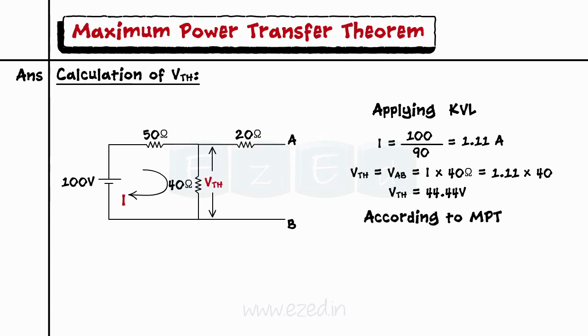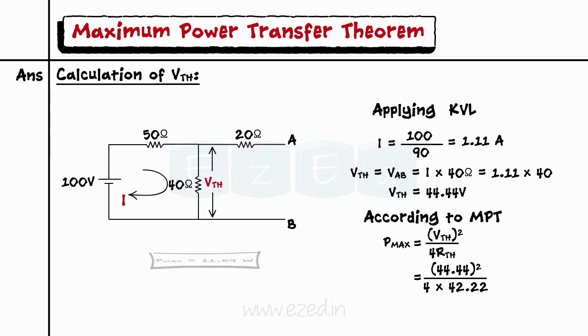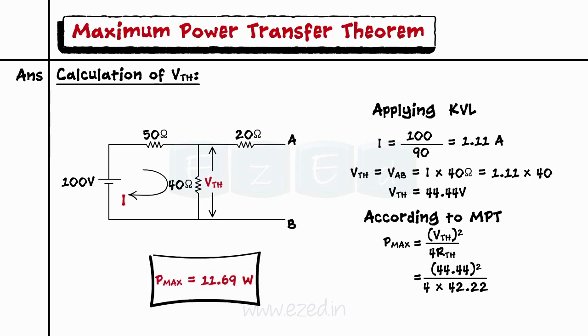According to the derived formula, Pmax equals Vth squared upon 4 times Rth, giving Pmax equals 11.69 Watts.